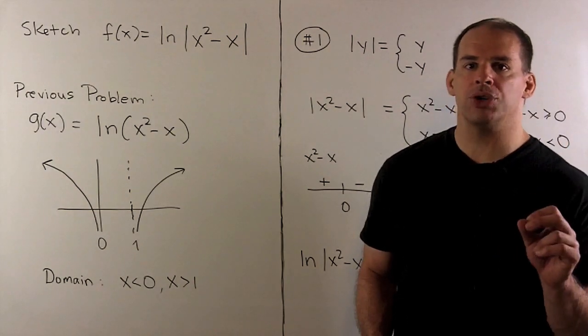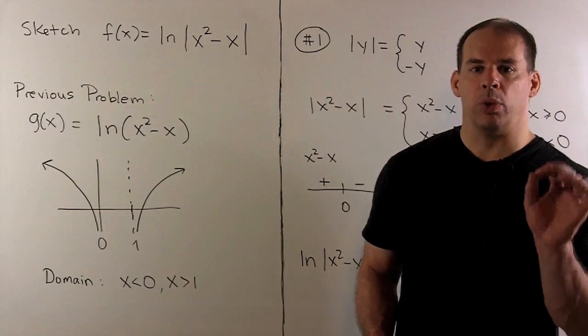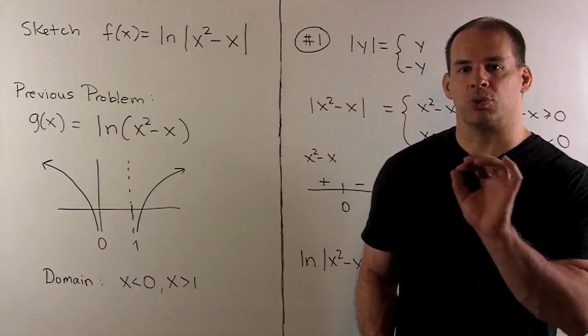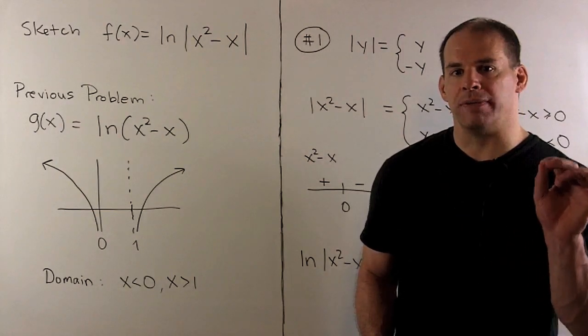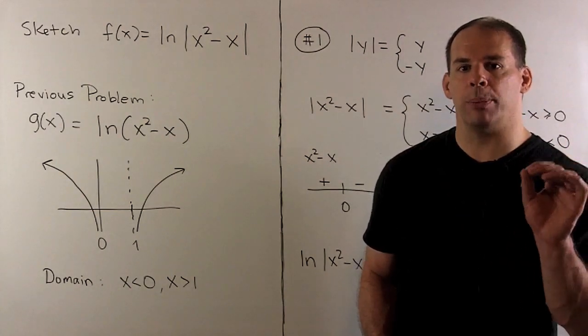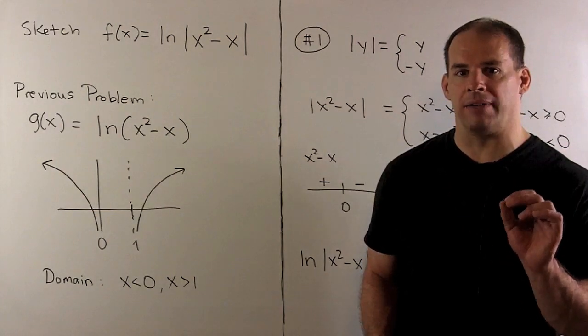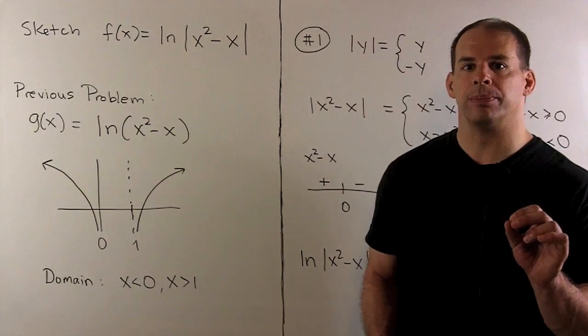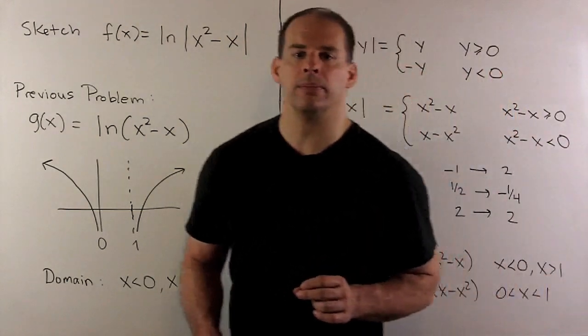First approach: we can just remove the absolute value sign completely by going to a piecewise defined function. Let's see how we do that.